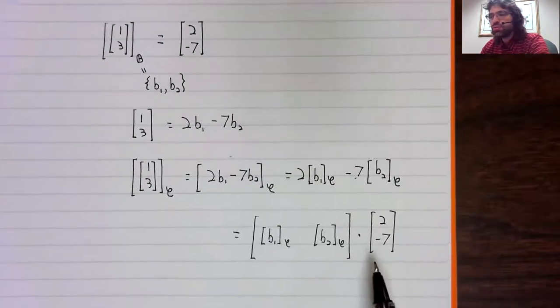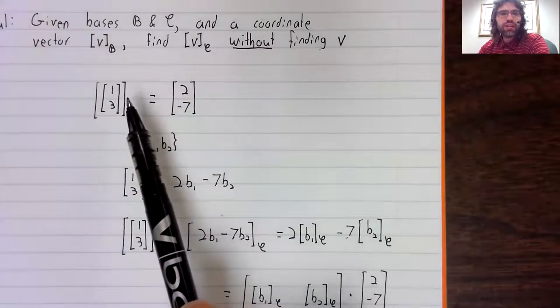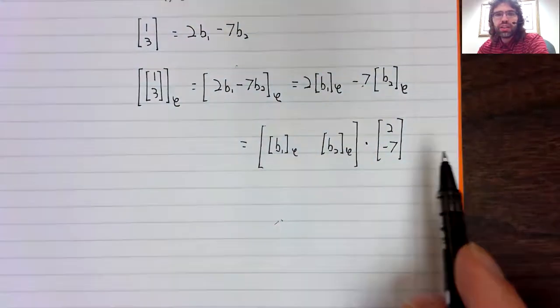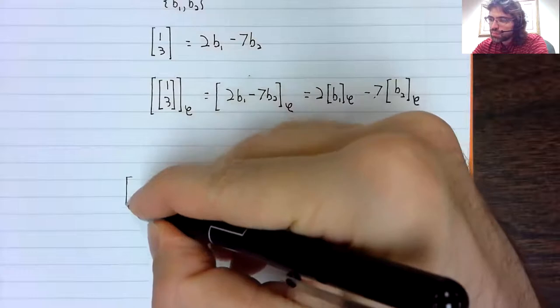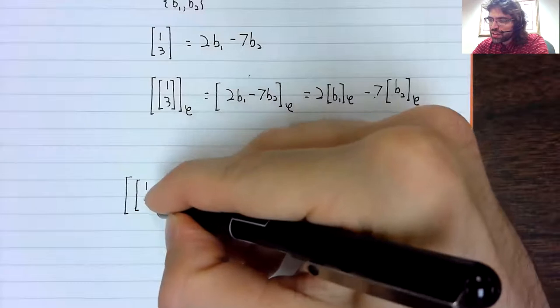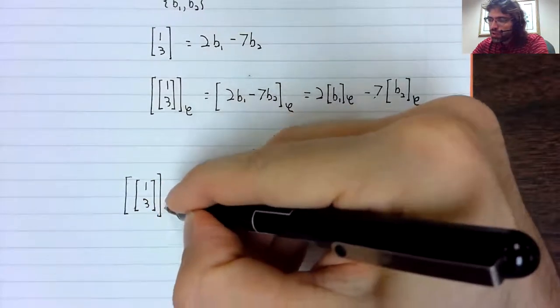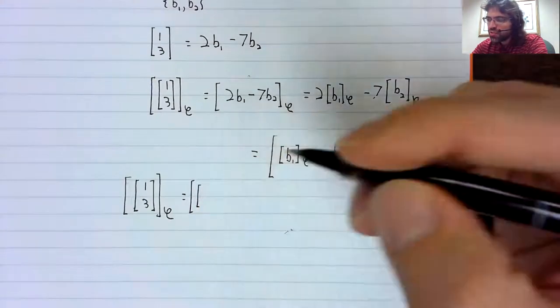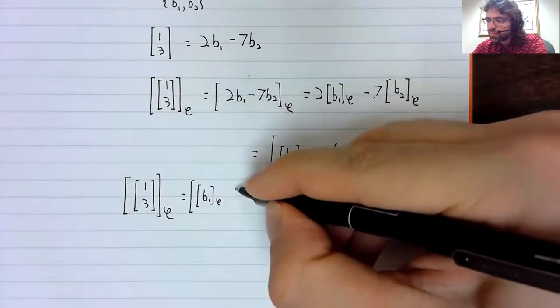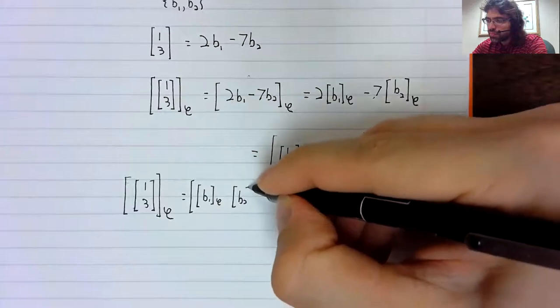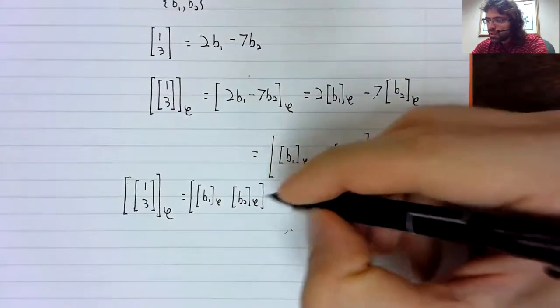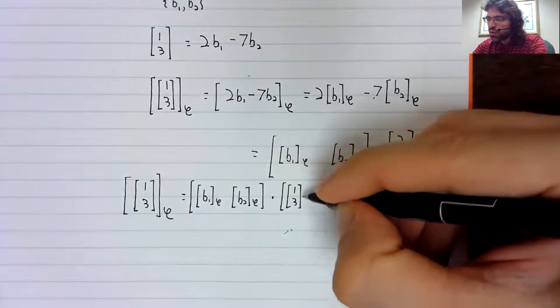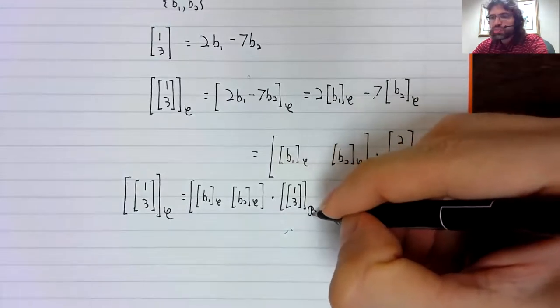Now, this vector [2, -7] was the coordinate vector with respect to B. So, what this equality is saying is that the coordinate vector with respect to C is this matrix times the coordinate vector with respect to B.